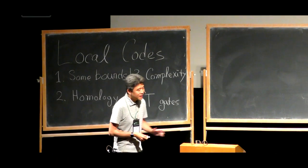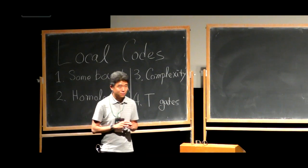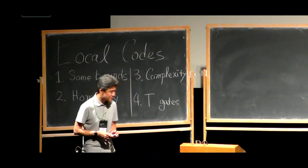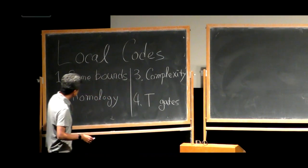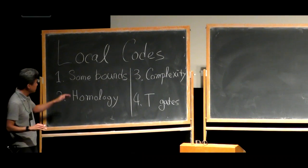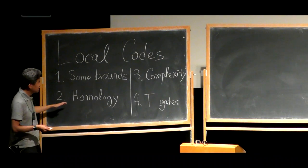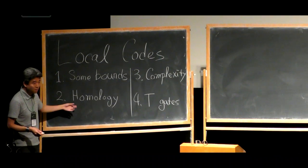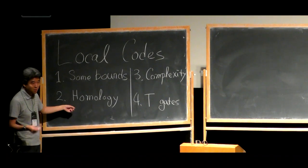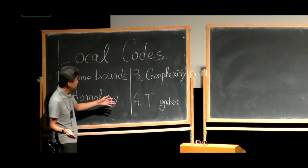I hope you have some sense of what the word 'topological' has been used in the literature after these four hours. So this is a rough plan. For today, we're going to derive some bounds on local codes. I will define what local codes are, then we'll talk about the one canonical example of topological codes — the toric code — and introduce the connection to homology. I do not assume your knowledge about homology, so don't be afraid if you don't know.